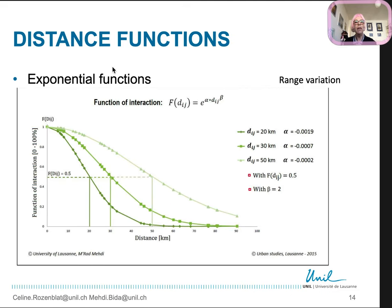With exponential function, we relax the problem of the distance of 0. The function varies from 1 to 0, which is very convenient to obtain the function similar to a probability of interaction. One can also vary the range with alpha, making the function of interaction vary from 50% at 20 km to 50km.